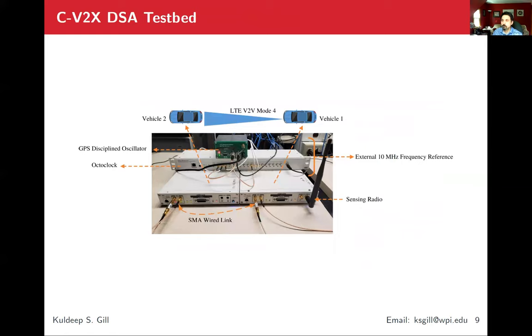This is the diagram of our testbed. We have two X310s. One X310 acts as a transmitter. That's the one which will select the DSA band with a VERT2450 sensing radio. We are using SMA wired links because LTE band 7 is a dedicated band. It's not unlicensed. So we can't use that without FCC coming after us. We are using OctoClock and GPSDO to provide frequency and timing synchronization. We have vehicle one which is doing spectrum sensing to find the opportunities in DTV spectrum and it's also maintaining a continuous CV2X link with vehicle two. Vehicle two is just acting as a receiver.